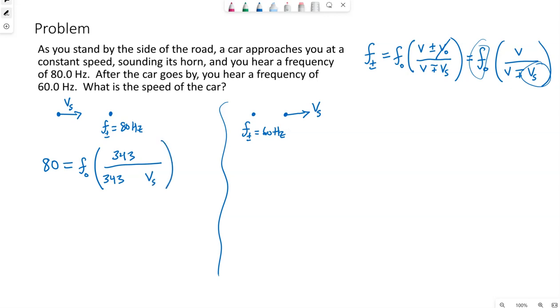Now this sign, we need that negative sign, because the top of those two signs represents the motion towards. So here's one equation with two unknowns.